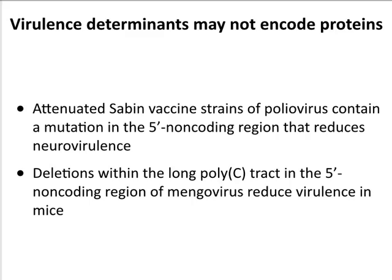Sometimes virulence genes don't actually encode proteins, so I call them virulence determinants. Two examples where mutations in non-coding regions reduce virulence: the Sabin vaccine strains of poliovirus have mutations in the 5' non-coding region that make them attenuated. Another virus — Mengovirus — has changes in the 5' non-coding region poly-C tract: wild-type strains have long poly-C tracts, and as you make them shorter by mutagenesis the viruses get more and more attenuated.